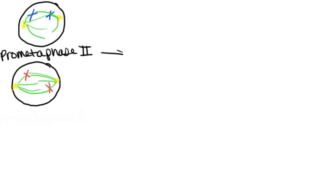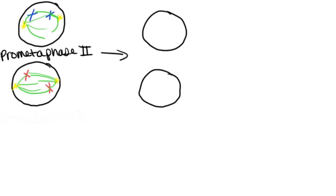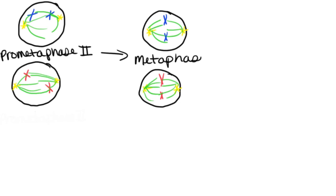After prometaphase II, we proceed into metaphase II. Metaphase always lines up chromosomes down the middle of the cell, and this particular metaphase is no different. The spindles were able to take those duplicated chromosomes and line them up. Notice that these cells don't really look any different than the cells we had when talking about mitosis — meiosis II is very similar to what happens in mitosis. In metaphase II, we're lining up the chromosomes down the middle.